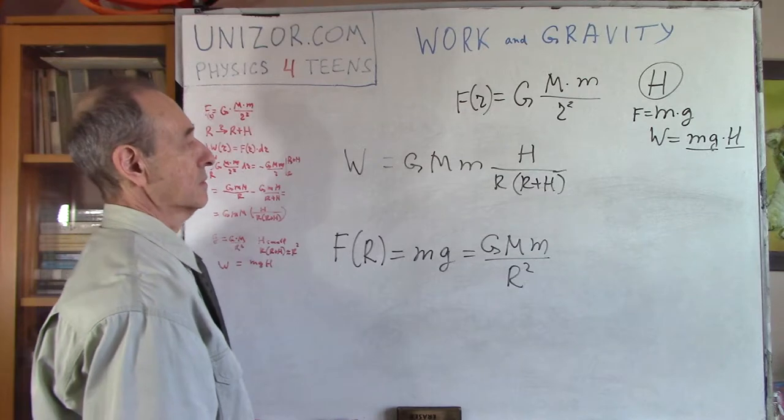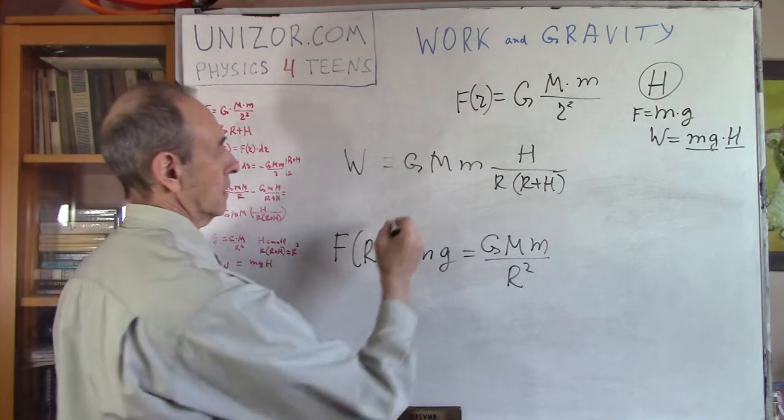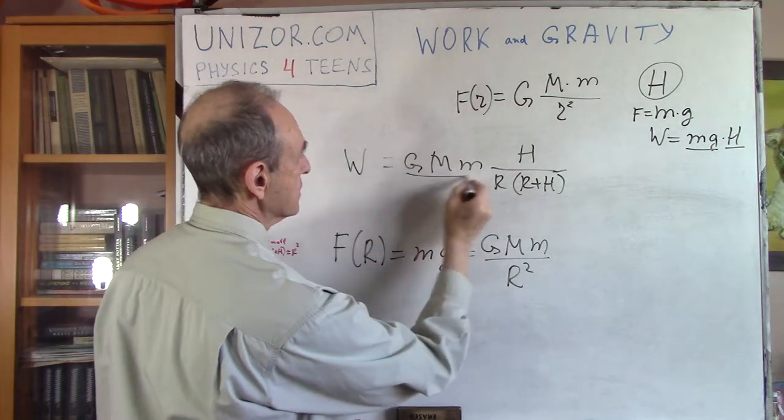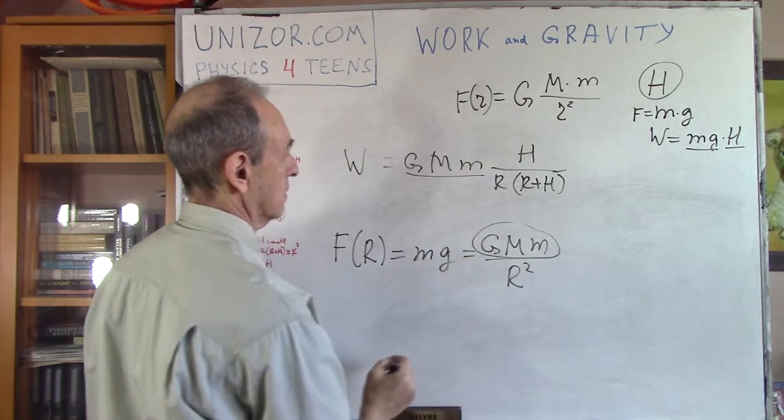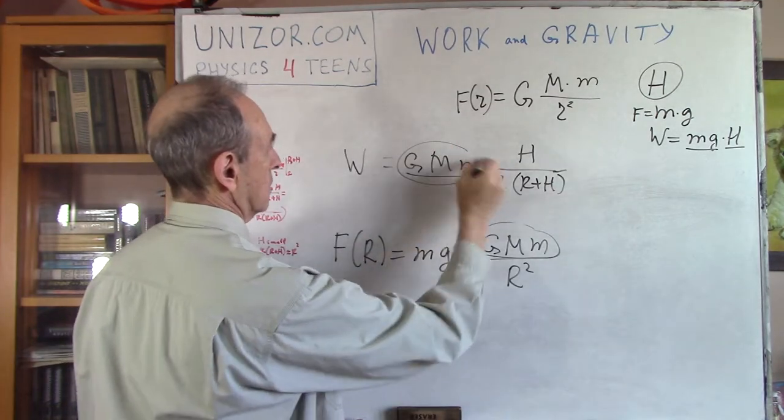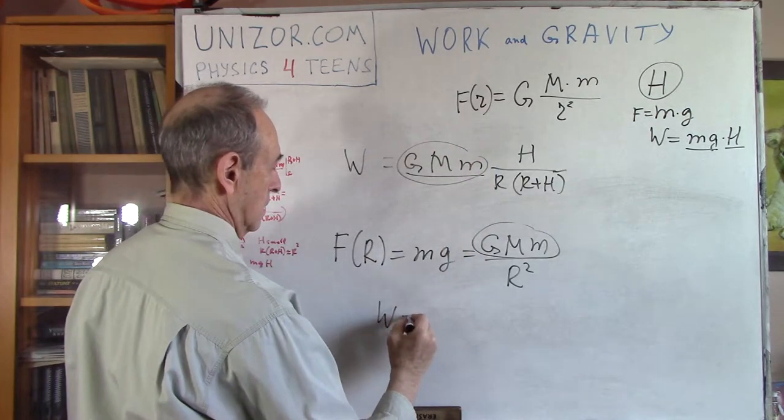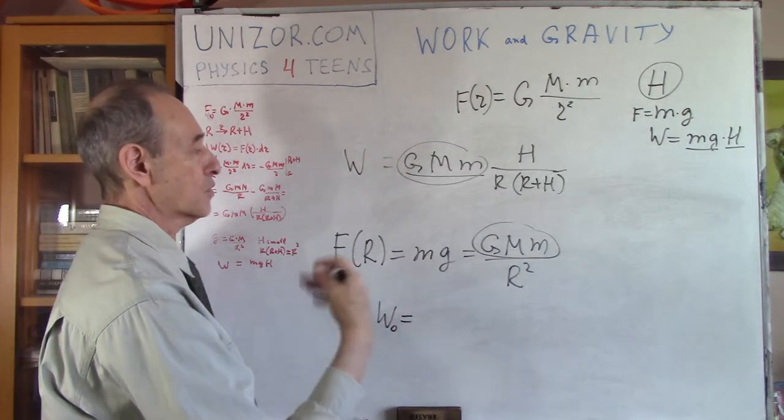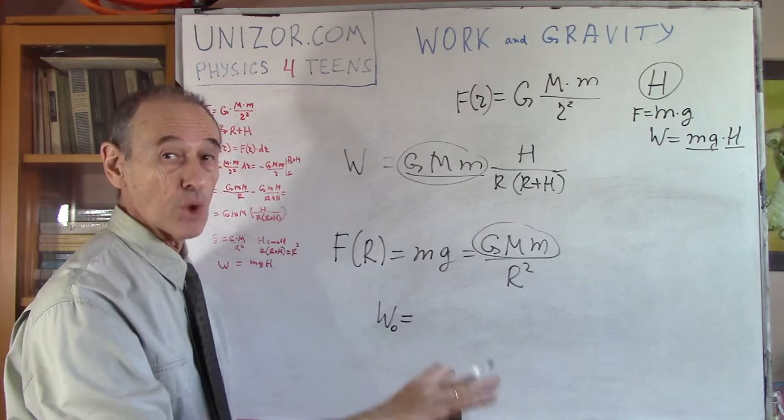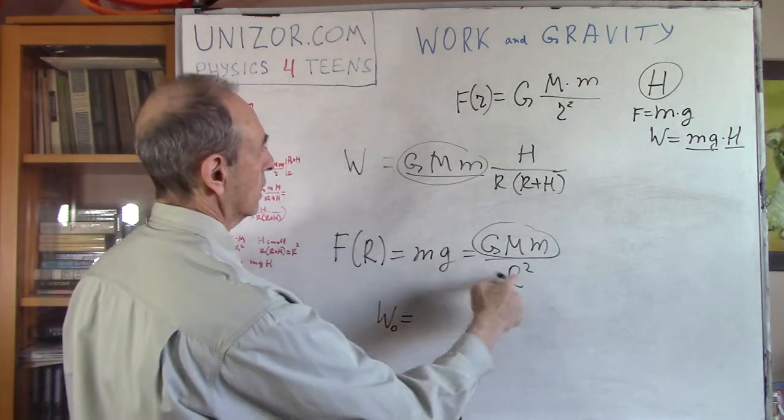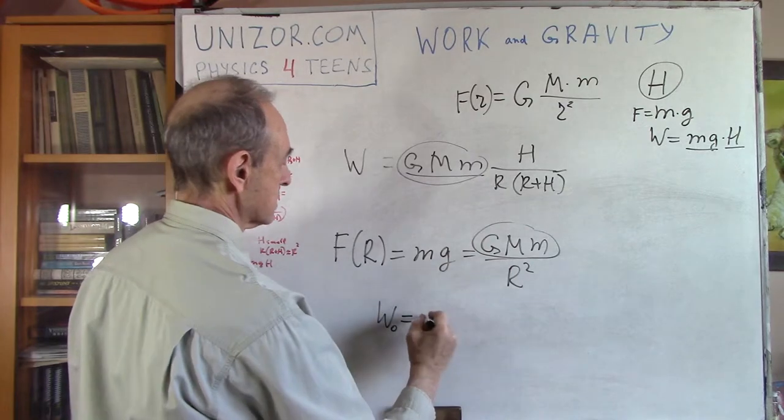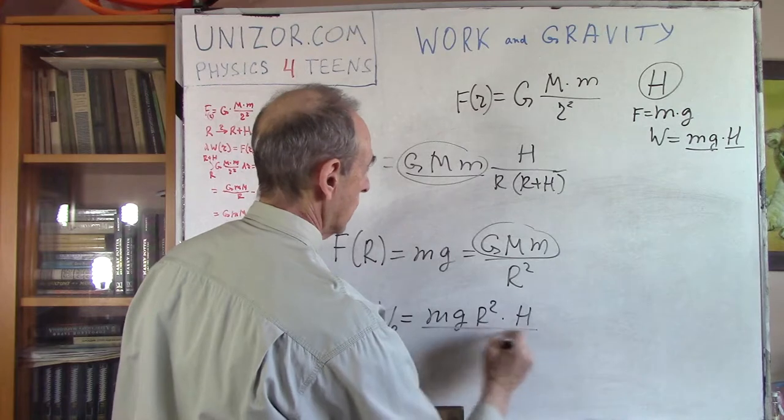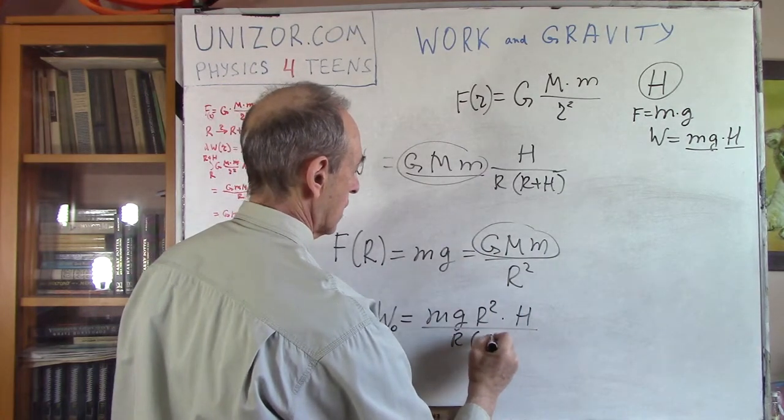Now, let's just think about it. What I will do, I will replace this. Okay, I will put w with the index zero, which means it's basically very close to the surface of the earth. So, I will replace this with mg R squared and then h and divide by r times r plus h.